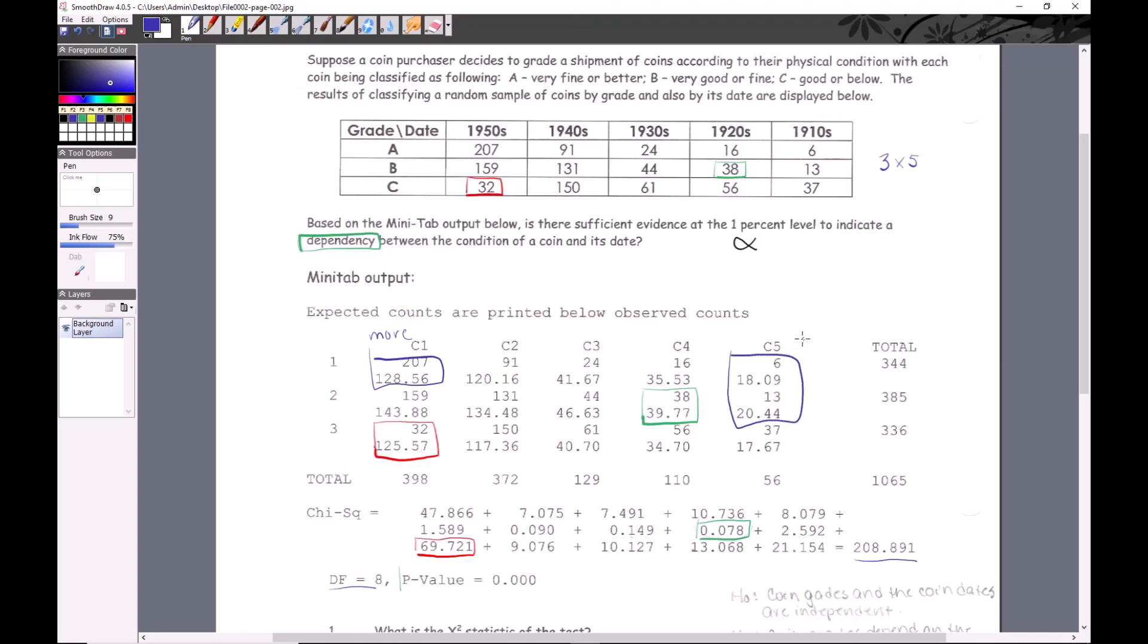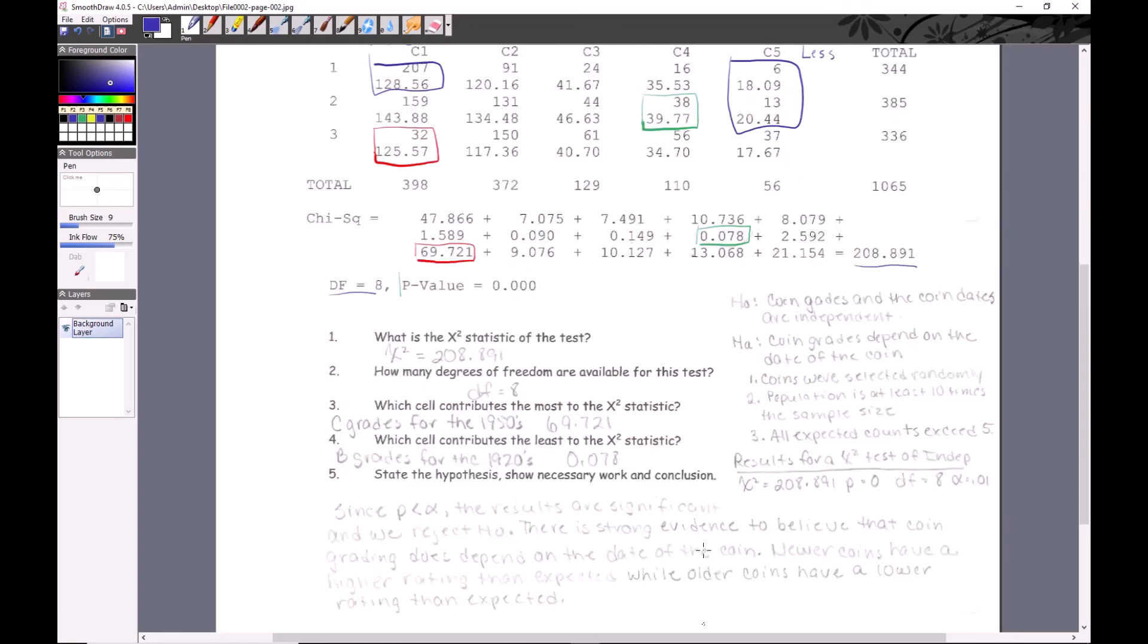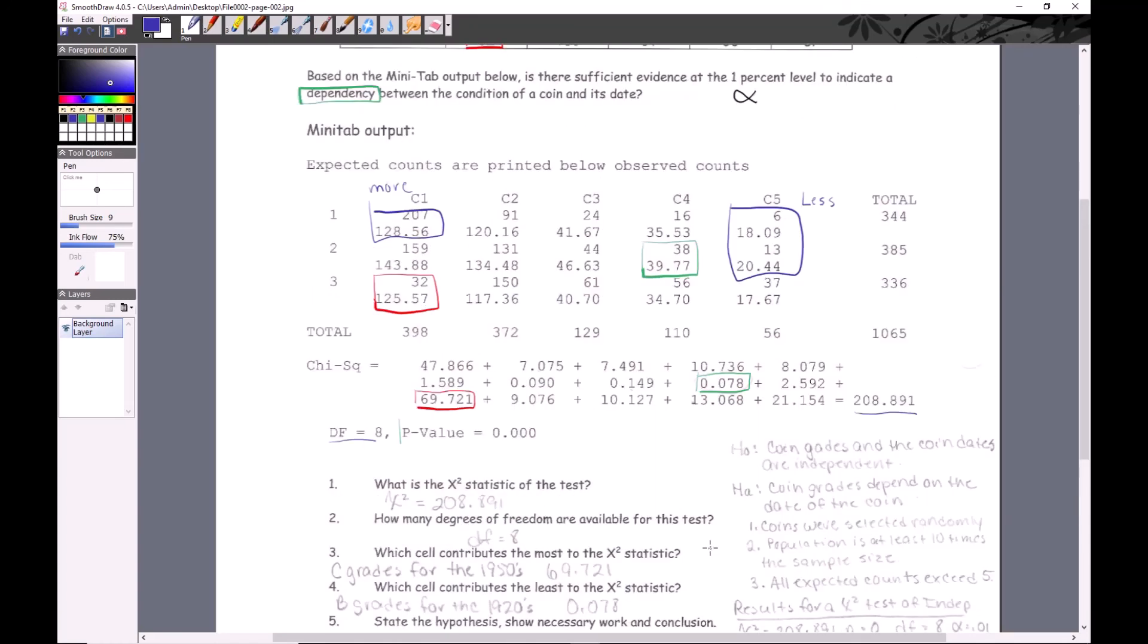They seem to be graded - we're expecting more of the A and B and we're getting less. I said newer coins have a higher rating than expected while older coins have a lower rating than expected. When you have 15 cells like this, it's very common that a lot of the discrepancy is just randomly scattered throughout, and it might be hard to find an overall trend. When you have fewer cells, it tends to be more obvious. My advice would be to do your best, match it up as well as you can, and if you can argue the point, then you'll win the point when it comes to writing up a follow-up.